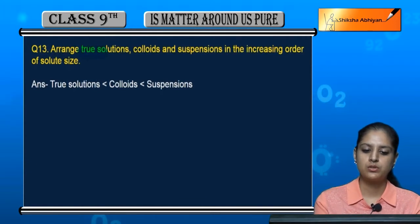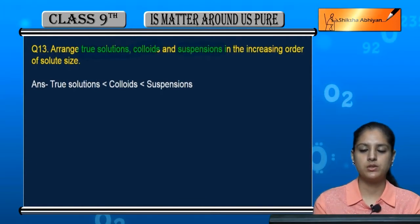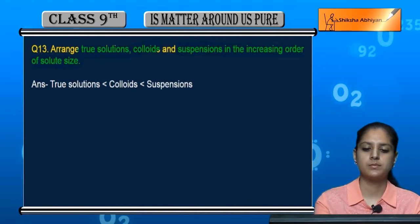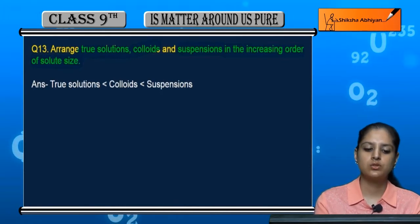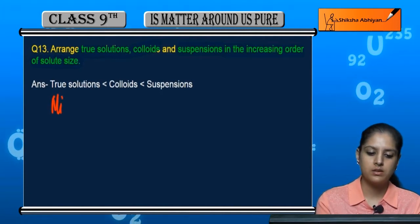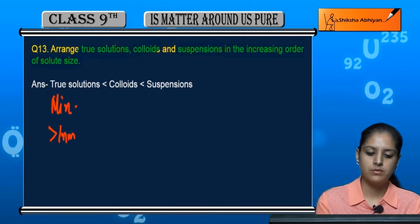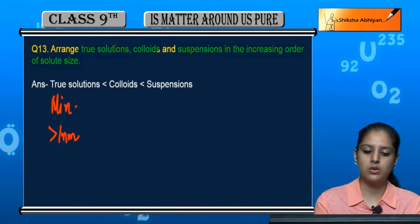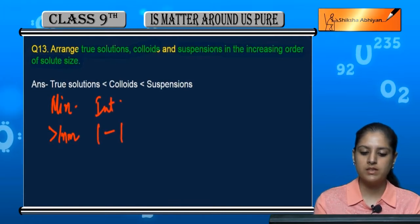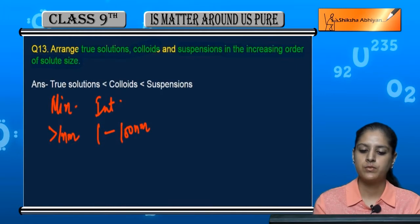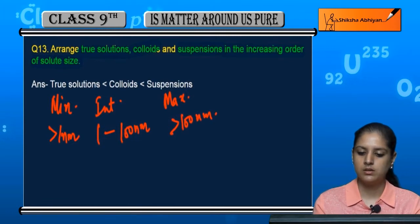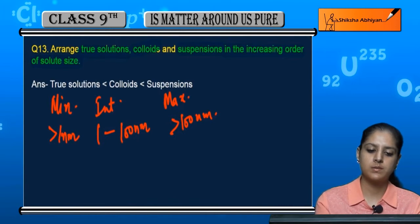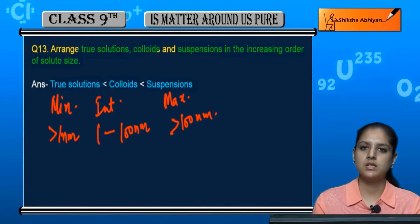Question number 13: arrange true solutions, colloids, and suspensions in increasing order of solute size. True solutions ka solute size minimum hota hai, which is less than one nanometer. Colloids are intermediate, 1 se leke 100 nanometer tak. Aur suspensions ka solute size sub se zada maximum hota hai, which is greater than 100 nanometer. So true solutions ka sub se kum, colloids ka unse zada, suspensions ka sub se zada.